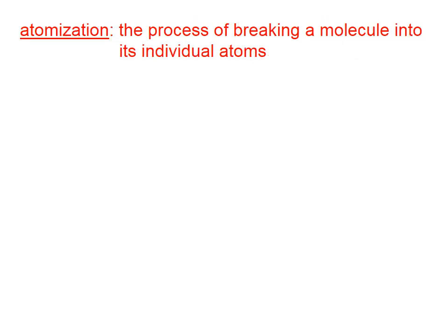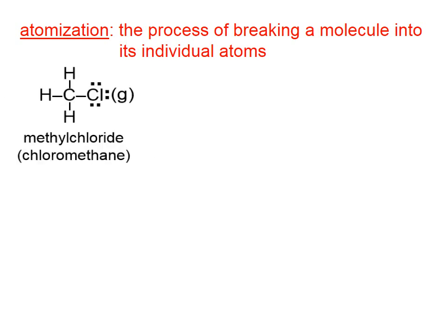Atomization is the process of breaking a molecule into its individual atoms. Let's take methyl chloride, for example, also called chloromethane. If we want to break this into its individual atoms, you can see that we need to break one carbon-chlorine bond and three carbon-hydrogen bonds.